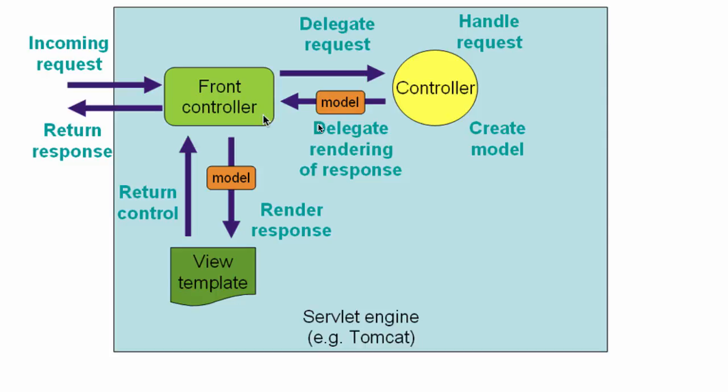Where did we configure that? That's configured in the web.xml. Anything that comes to the front controller, the dispatcher servlet would look at the subsequent part of the URL — it will look at slash login and see if there is any controller annotated with slash login. It would then find a controller method which is annotated with slash login.